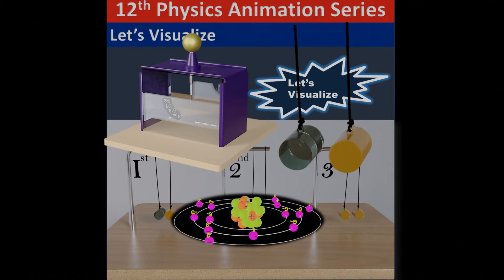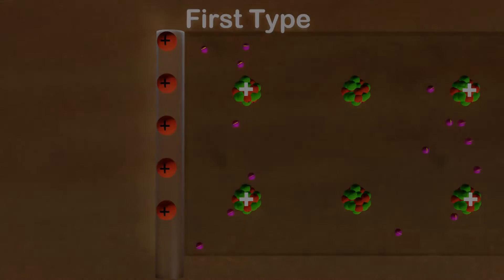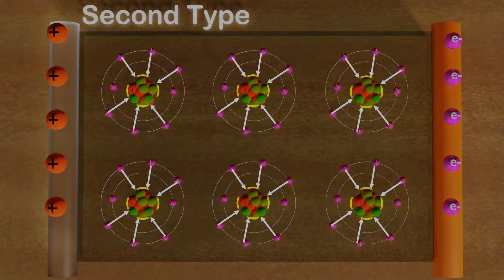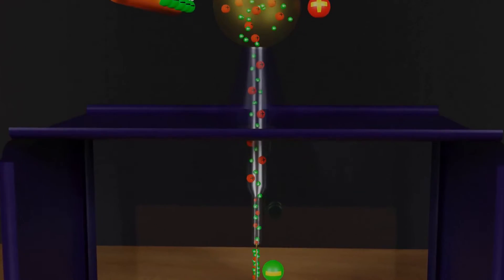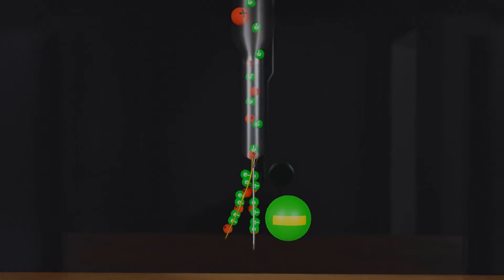In our previous videos we learnt that objects can be charged either positively or negatively, and that conductors allow charge to move freely while insulators prevent the flow of charge. In the last video we also discussed the electroscope, a device that can detect the presence of charge.